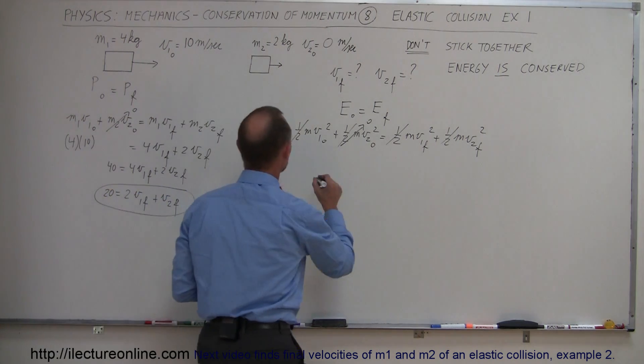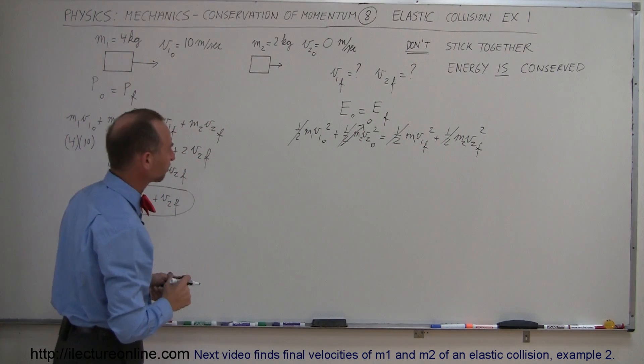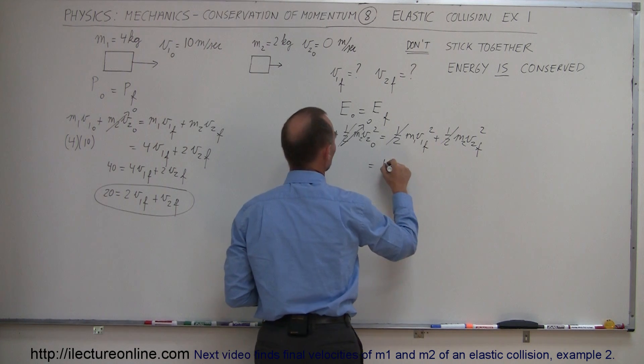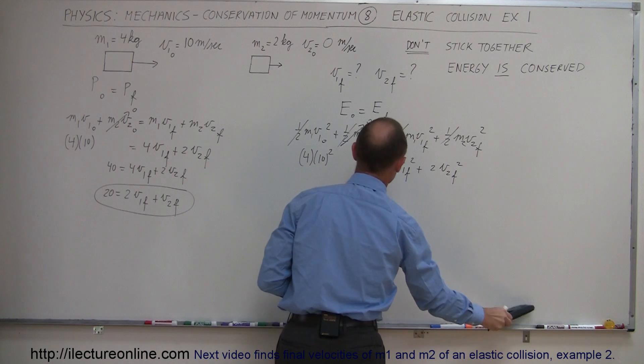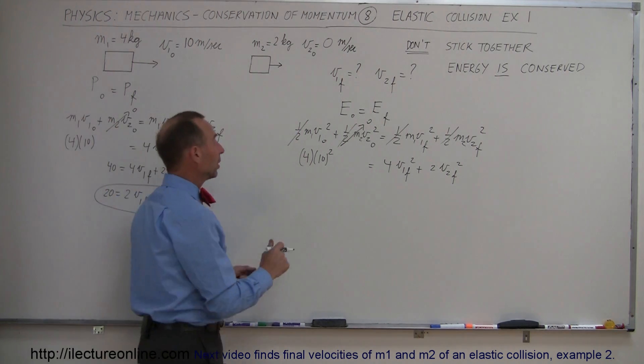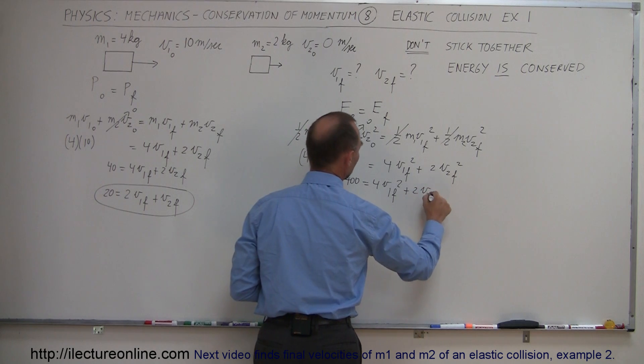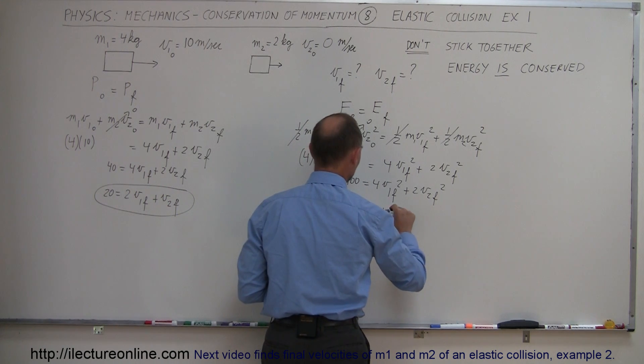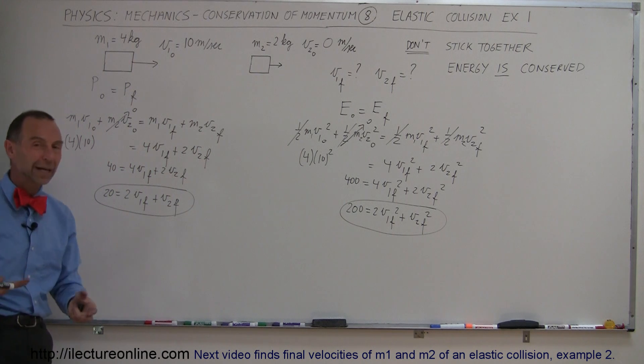We need a second equation that allows us to solve for the two unknowns. So now I'm going to use the energy equation. We have 4 kilograms moving with initial velocity at 10 meters per second squared equals mass 1, which is 4 times V1 final squared plus 2 times V2 final squared. Simplify that a little bit more. That's 100 times 4, that would be 400 equals 4V1 final squared plus 2V2 final squared. And I can divide both sides of this equation by 2. So we have 200 equals 2V1 final squared plus V2 final squared. And so there's my second equation. Notice two equations, two unknowns, algebraically I should be able to solve that.